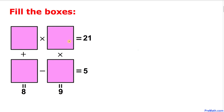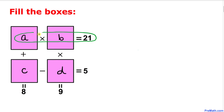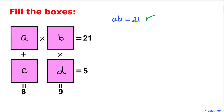Let's label these boxes: I'm going to call this box A, this box lowercase B, this box C, and this box D. Now let's multiply these boxes horizontally — A times B equals 21. Here I have copied down A times B equals 21.